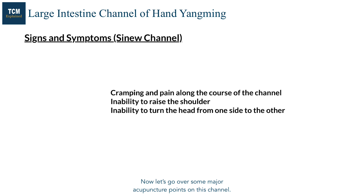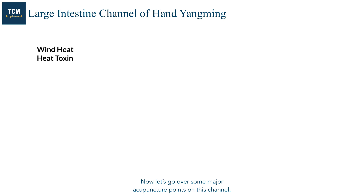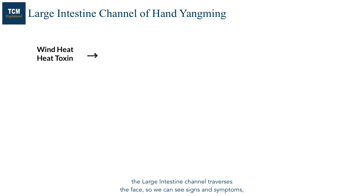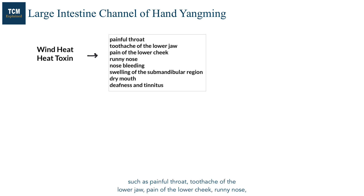Now let's go over some major acupuncture points on this channel. Wind heat or heat toxin in the large intestine channel often manifests on the face because Yang pathogenic factors such as wind or heat attack the Yang part of the body such as the head. The large intestine channel traverses the face, so you can see signs and symptoms such as painful throat, toothache of the lower jaw, pain of the lower cheek, runny nose, nose bleeding, and swelling of the submandibular region.